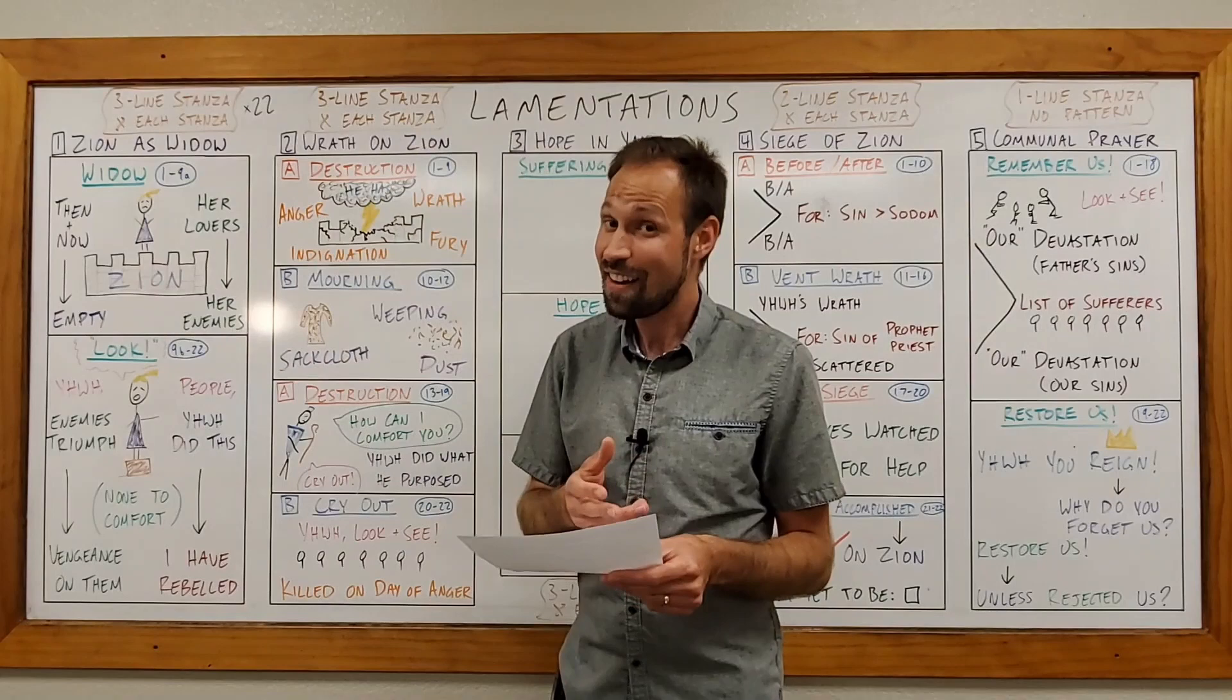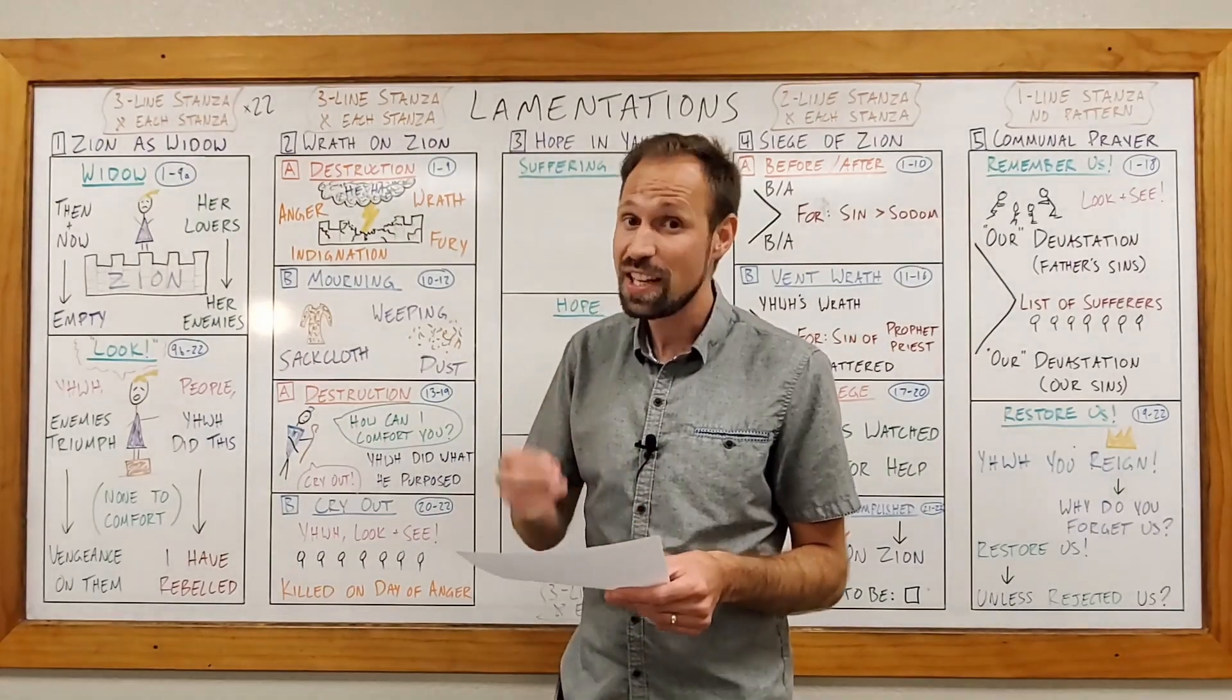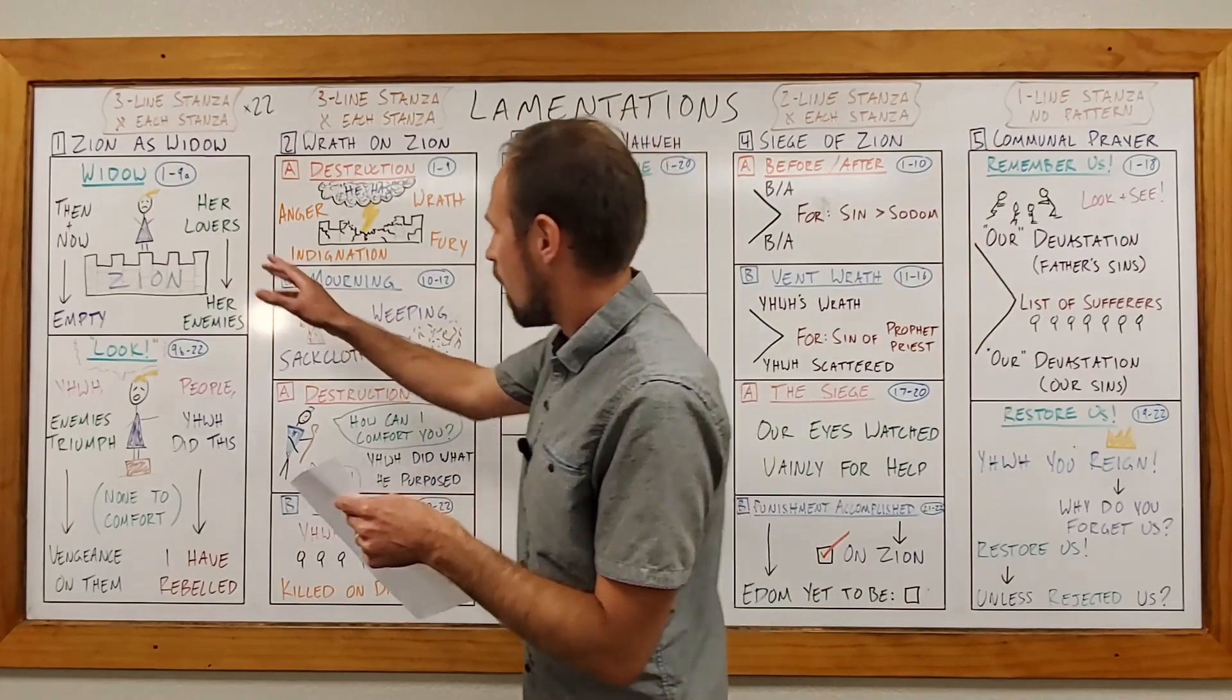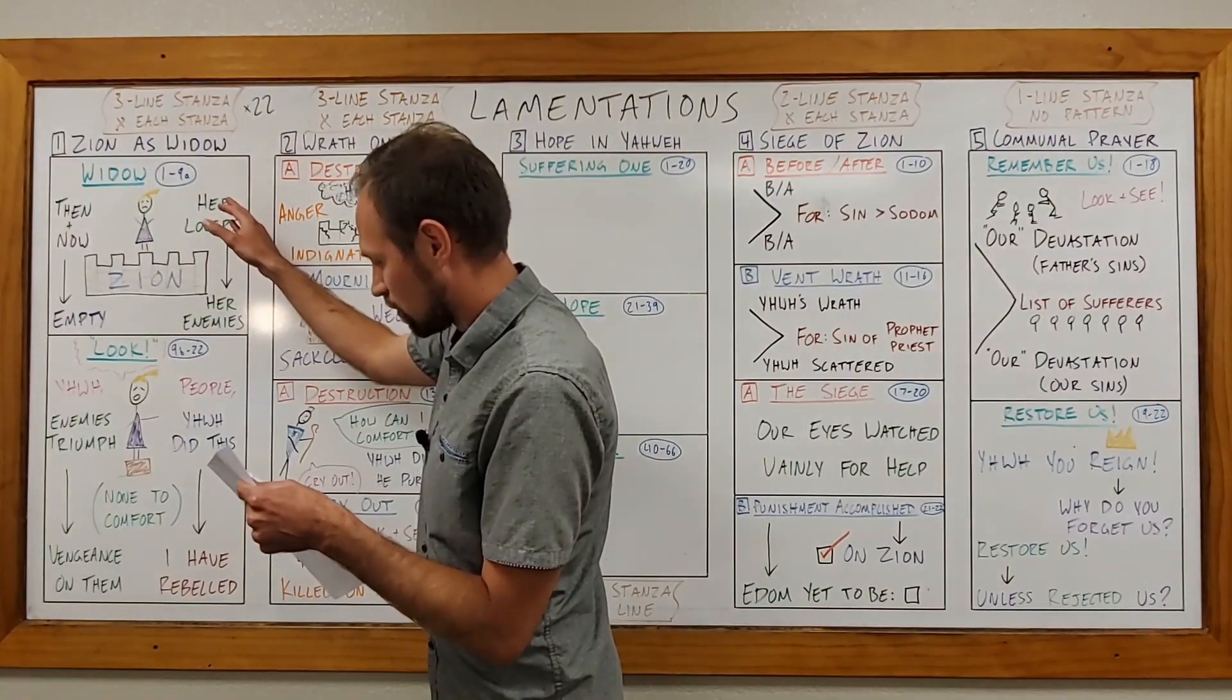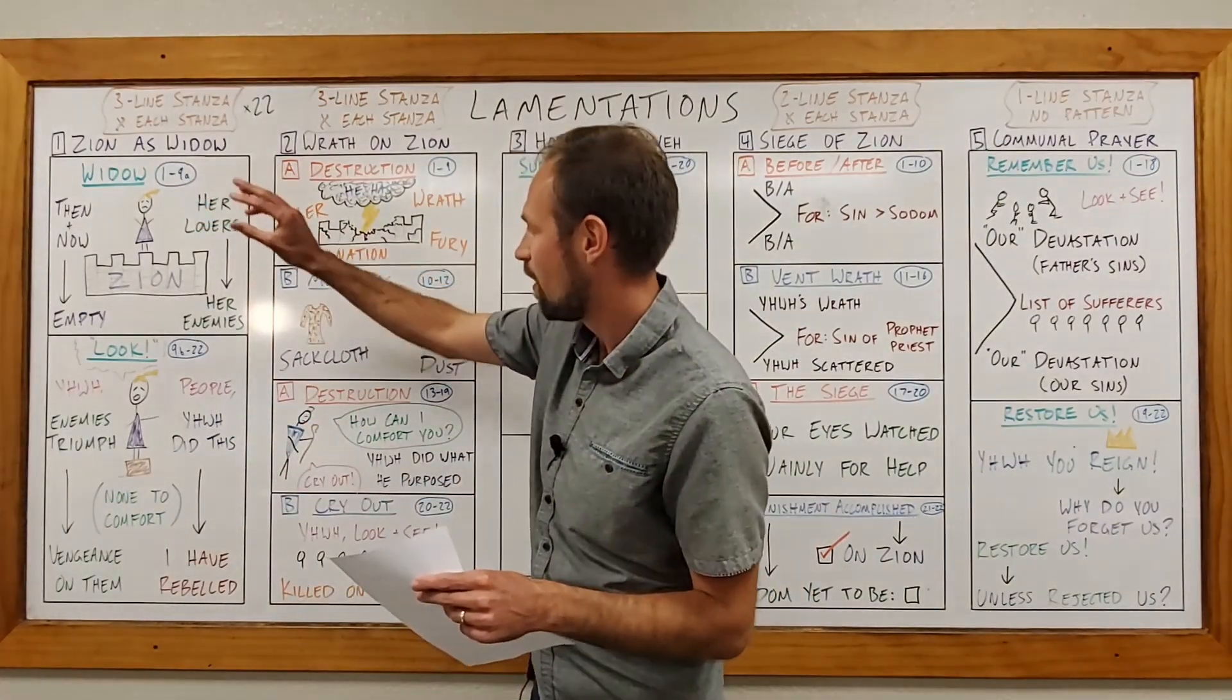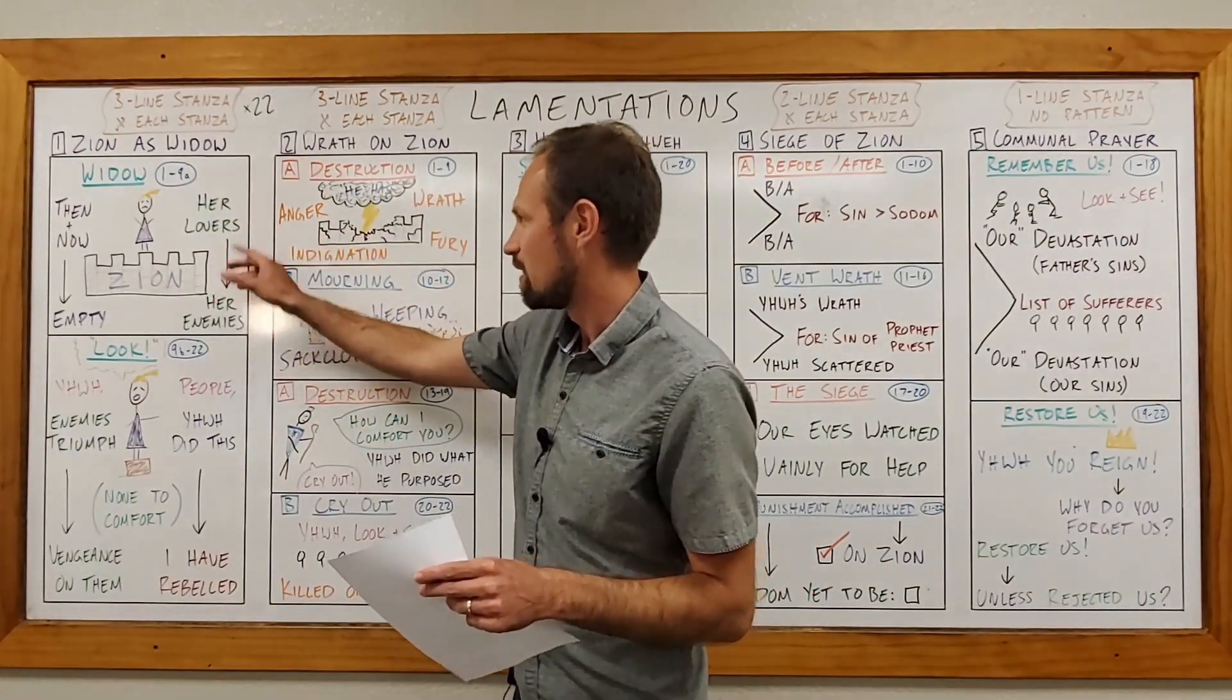She is an adulteress. It says that among all of her lovers, there was none found to comfort her. All of her friends have become her enemies. Look at this, her lovers.